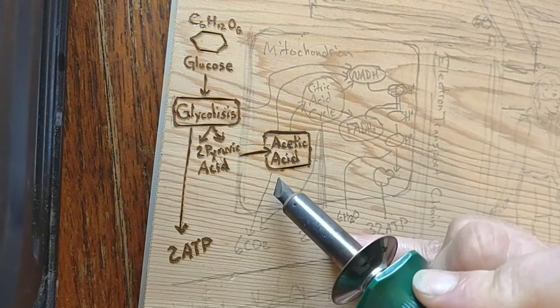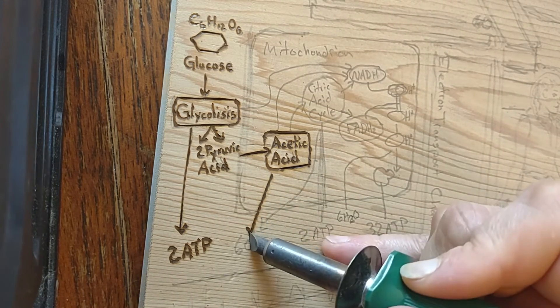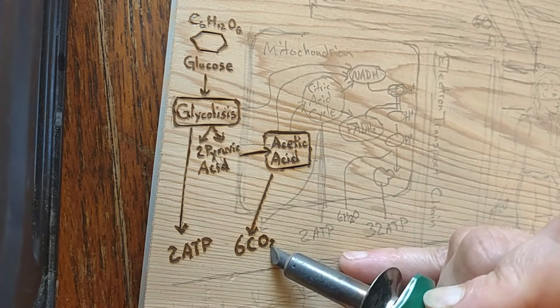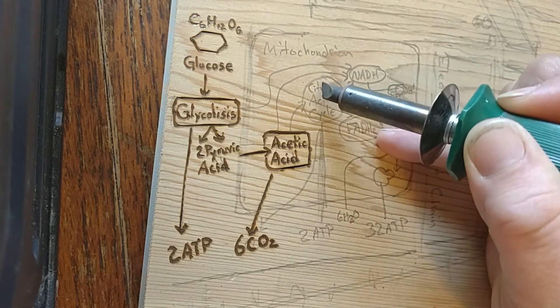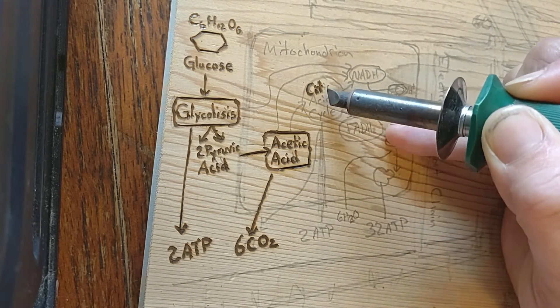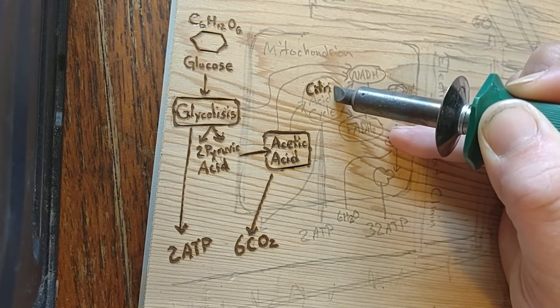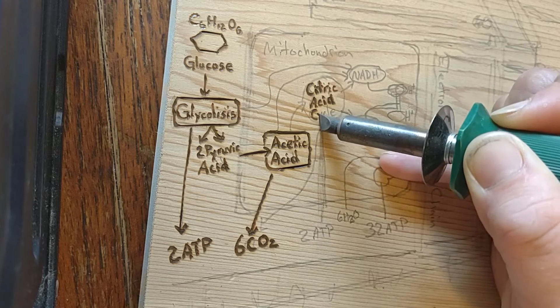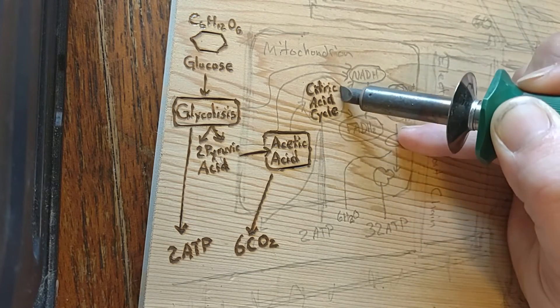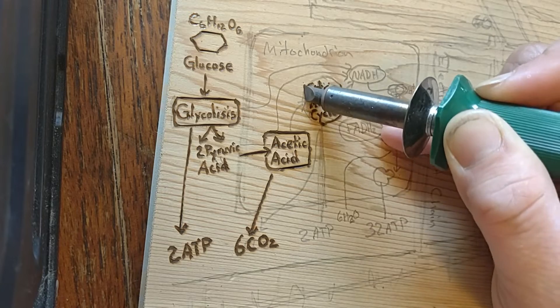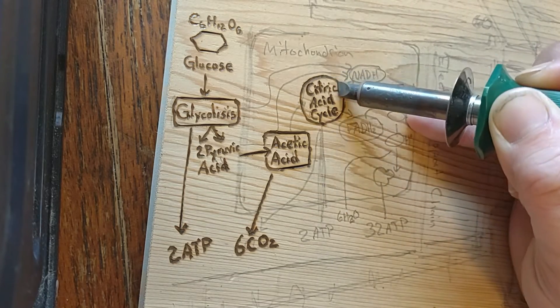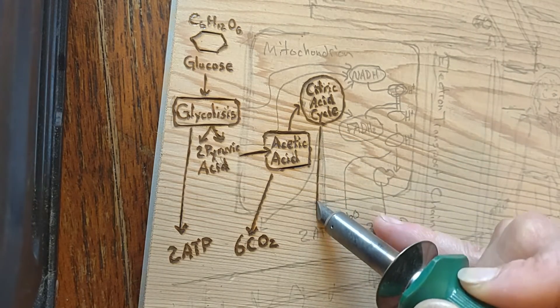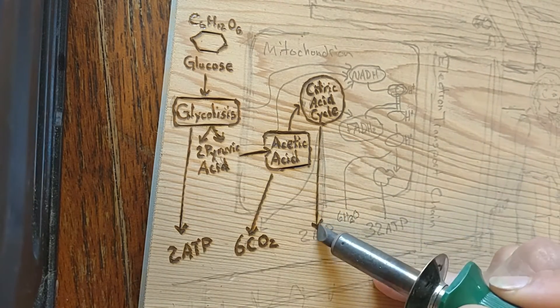Pyruvate is oxidized to acetyl-CoA and CO2 by the pyruvate dehydrogenase complex. The PDC contains multiple copies of three enzymes and is located in the mitochondria of eukaryotic cells and in the cytosol of prokaryotes. In the conversion of pyruvate to acetyl-CoA, one molecule of NADH and one molecule of CO2 is formed.